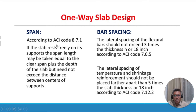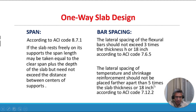For span length, per ACI Code 8.7.1, if the slab rests freely on its supports, the span length may be taken as the clear span plus the depth of the slab but need not exceed the distance between centers of supports. For bar spacing, flexural bars should not exceed three times thickness h or 18 inches (ACI 7.6.5), and temperature and shrinkage reinforcement should not be placed farther apart than five times the slab thickness or 18 inches (ACI 7.12.2).